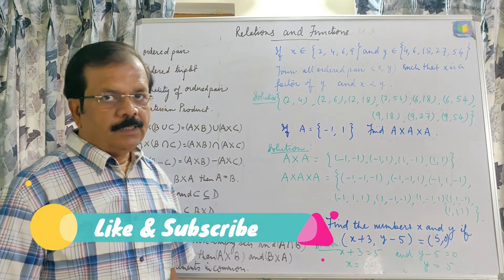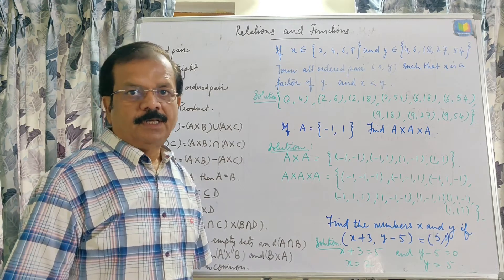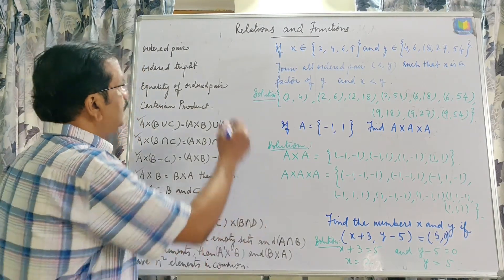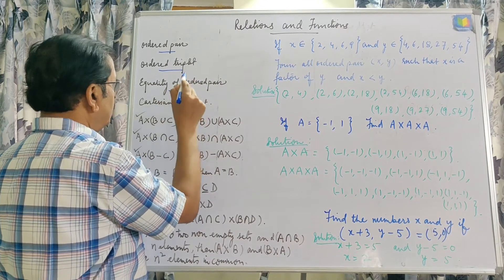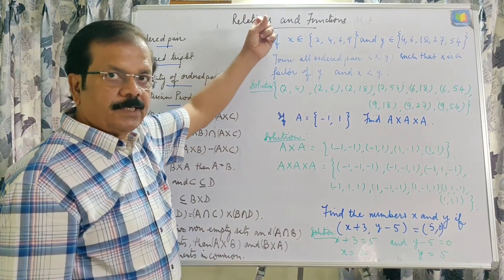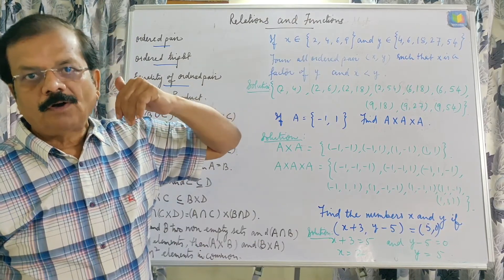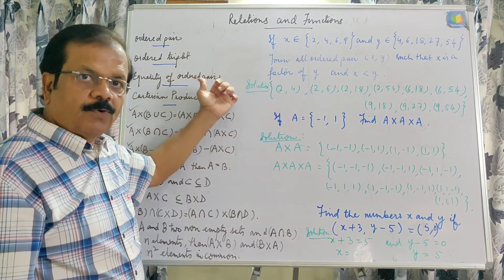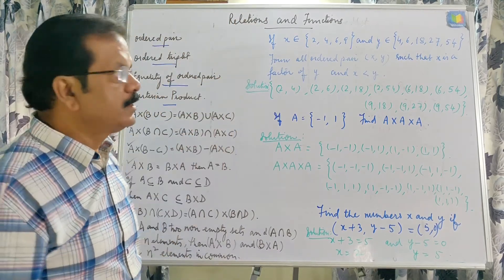Hello students. In this video we are going to start the new chapter Relations and Functions. Before we study relations, these words are very important and frequently used: ordered pair, ordered triplets, equality of ordered pair, and Cartesian product. These four concepts are required for studying relations. We will start with the concept of ordered pair.